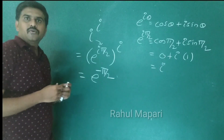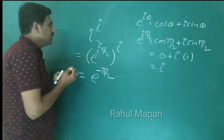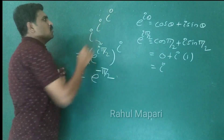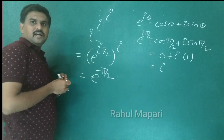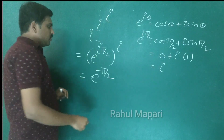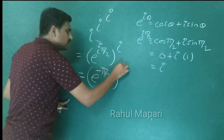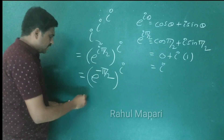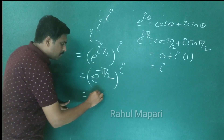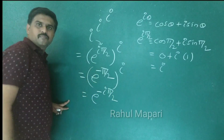Now again if you consider, if you increase the power — if I take i to the power i to the power i — so what we get? We raise to the power i and we get e power minus i pi by 2.